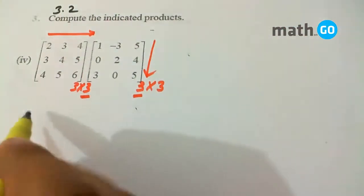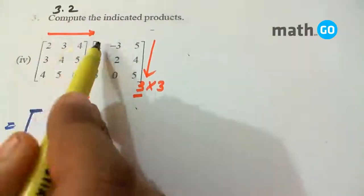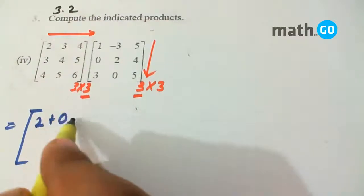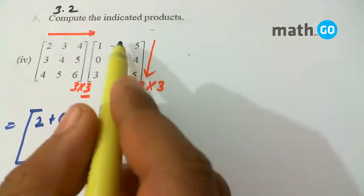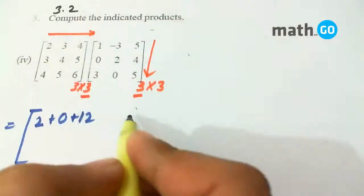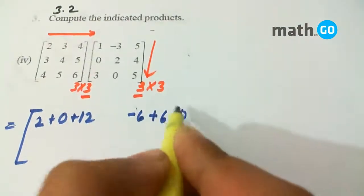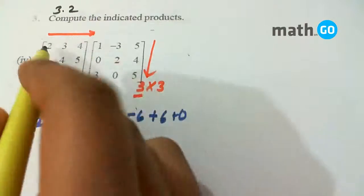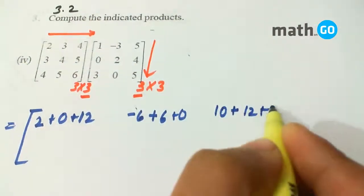The product matrix will be 2 x 1 plus 3 x 0 plus 4 x 3. The second element of the same row will be minus 6 plus 6 plus 0 and similarly 2 x 5 plus 12 plus 20.